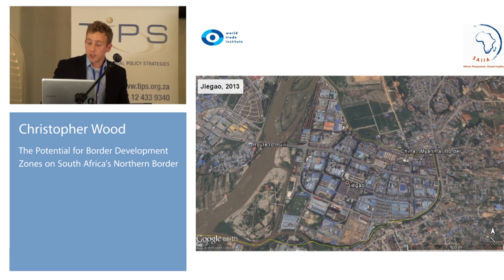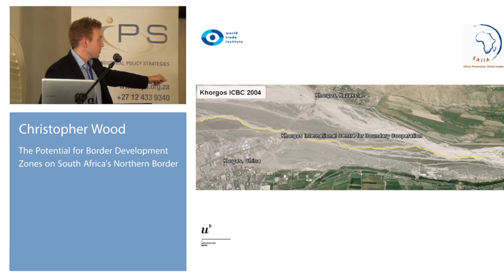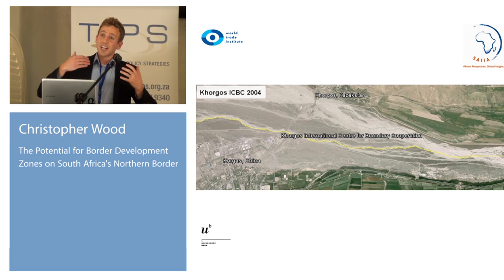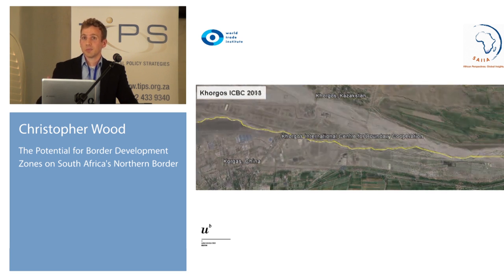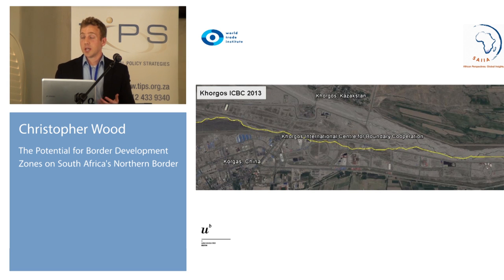The third model — the one they're moving closer and closer towards — is the Korgas International Center for Boundary Cooperation on the border with Kazakhstan. This is still being developed, but it's the most unique example because it actually physically crosses the border and stands as its own customs area. You can enter the zone visa-free for about 30 days from either side. It will have a vast array of businesses that don't abide by the same rules as either side of the border — almost like its own little country. These zones haven't been quite as successful as the coastal zones, but they've been able to catalyze development in areas that otherwise wouldn't have had much.